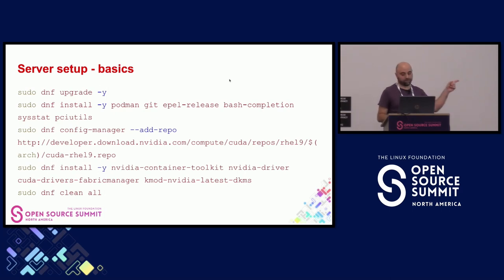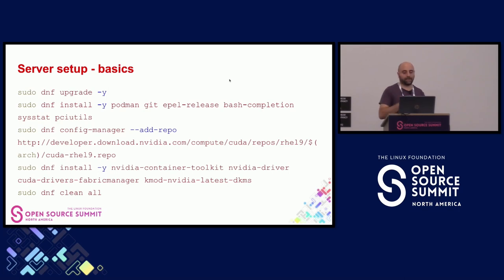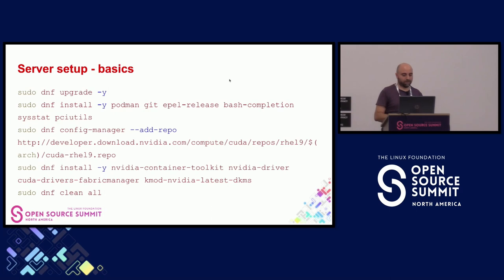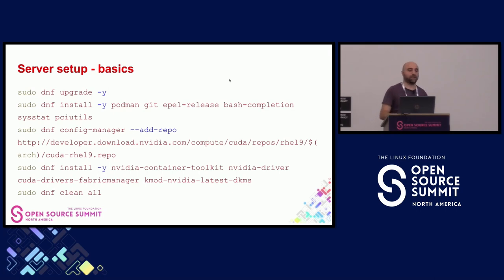The Fabric Manager is useful if you use multi-GPU setups; for a single GPU you only need the CUDA drivers. We also use DKMS, which auto-compiles the NVIDIA kernel module each time you install a new kernel. That's why we use the EPEL release repo — it's where DKMS lives. We recommend DKMS because sometimes the pre-compiled module isn't ready for the kernel version you want to upgrade to, causing you to wait on critical upgrades. It's better to compile the kernel module yourself with DKMS.